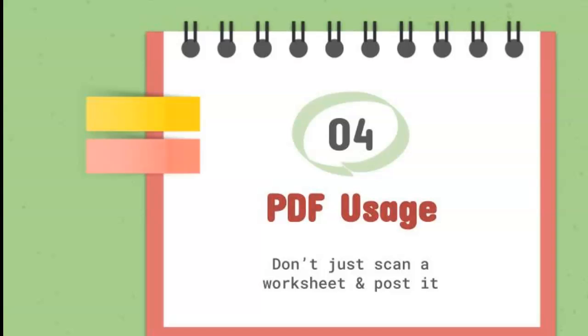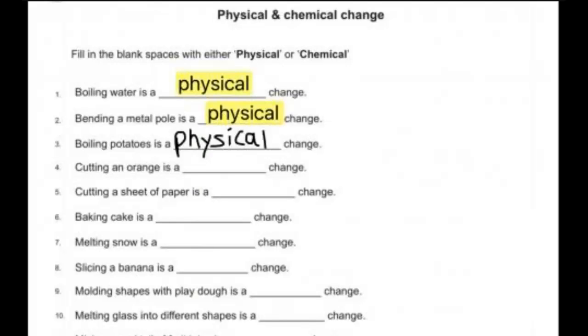Another tip is to think about whether or not scanning that worksheet and putting it online is really the best way to find out if your students understand the material. A scanned PDF is hard to interact with. If you're going to use that worksheet, at least snip an image, make it horizontal, and maximize the full screen for your students.